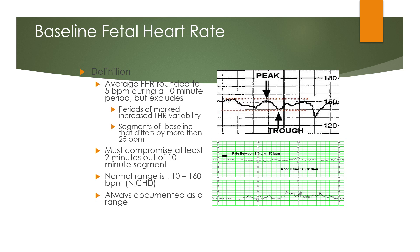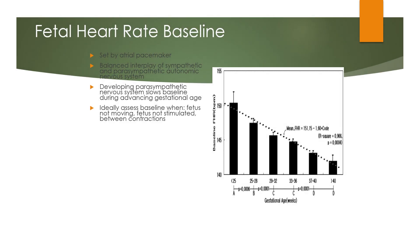Baseline fetal heart rate is the average fetal heart rate rounded to 5 beats per minute during a 10-minute period, excluding segments of marked increased fetal heart rate variability that exceed 25 beats per minute, and must comprise at least 2 minutes out of 10. Normal range is 110 to 160 beats per minute, always documented as a range. The baseline is set by the atrial pacemaker through balanced interplay of sympathetic and parasympathetic autonomic nervous systems. Ideally, assess the baseline when the fetus is not moving and not stimulated, between contractions.